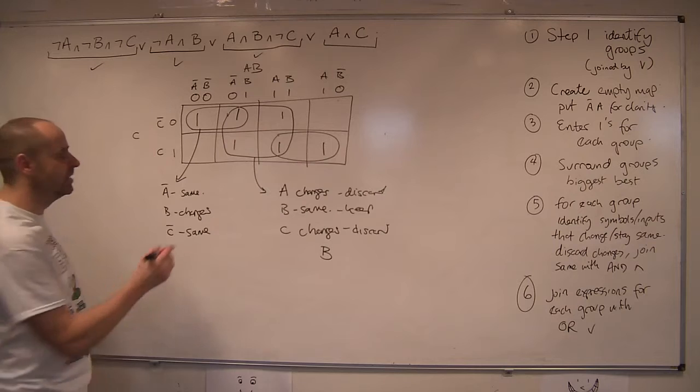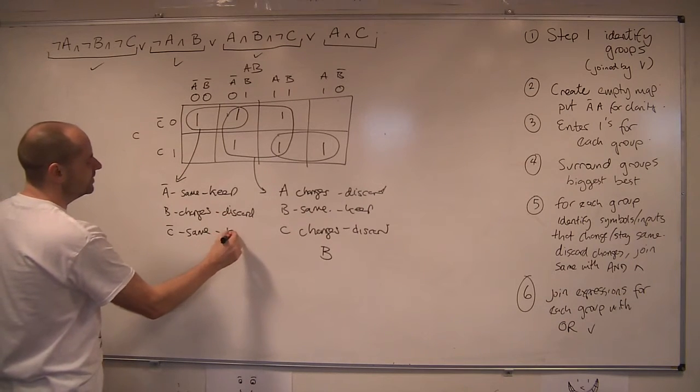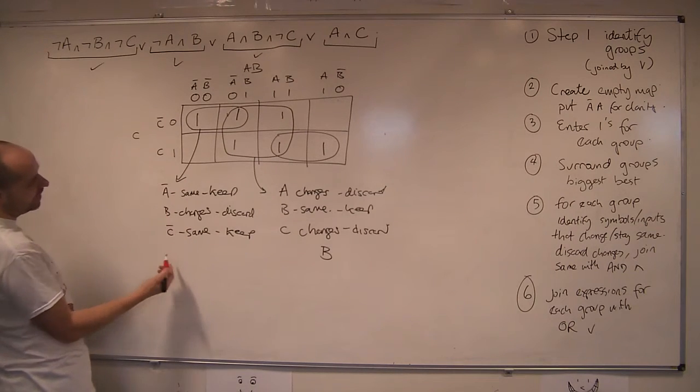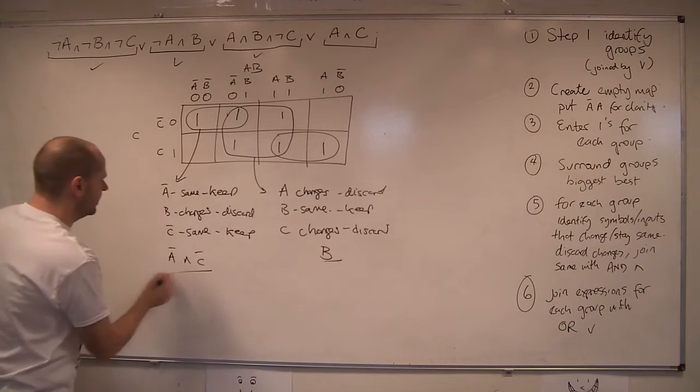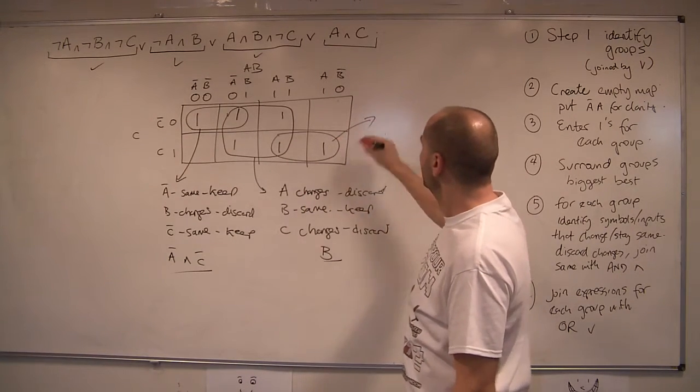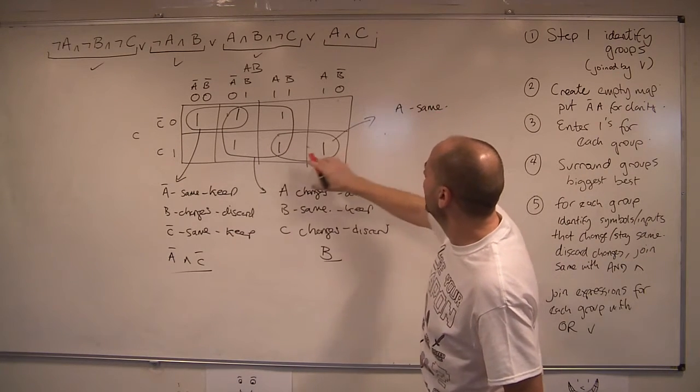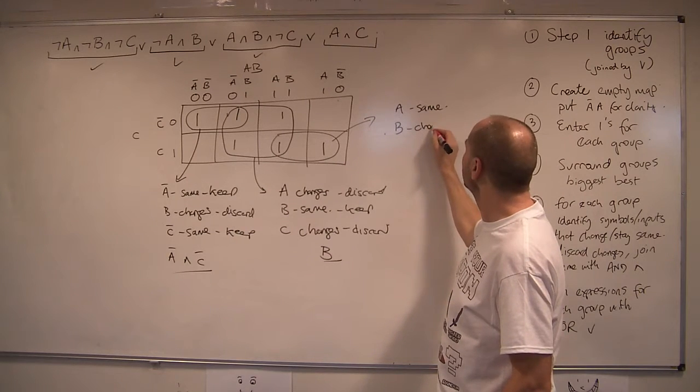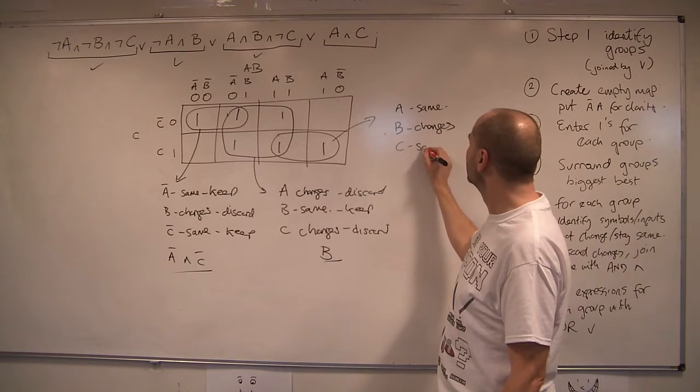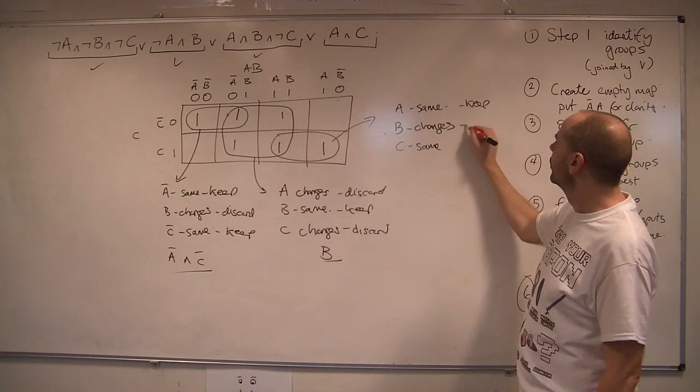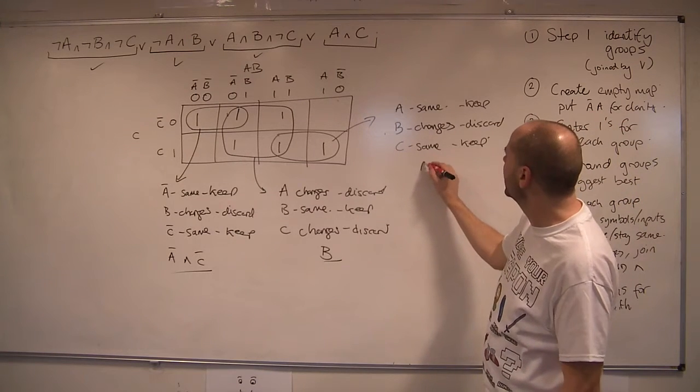Right. So the ones that stay the same, we're going to keep. So keep that. Discard that. We're not interested in you, Mr. B. You change. You changed. We don't want to know. We stayed the same. You changed. Go away, sort of thing. Right. So the expression for this, not A and not C. Okay. So let's just underline those. Got a lot of writing. Right. Final part of the map to look at. Right. So look at this. We've got A and A. So A's staying the same. We've got B and not B. So B changes. So we can get rid of you. And then we're only touching the C row. So C stayed the same. Okay. So we're going to keep that. We're going to discard that. And we're going to keep that. Okay. So the expression for that part of the map is going to be A and C.